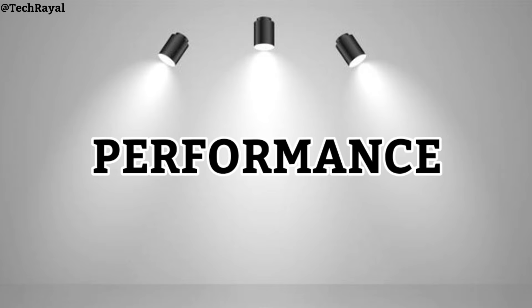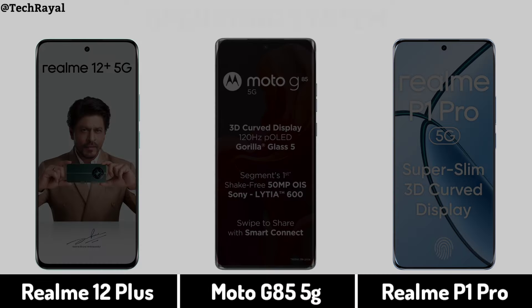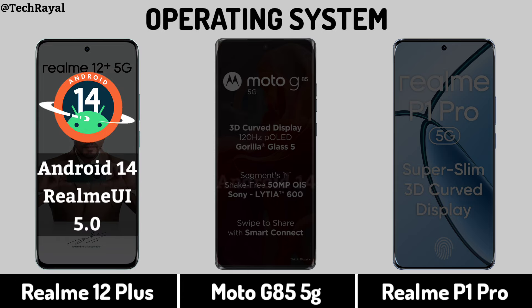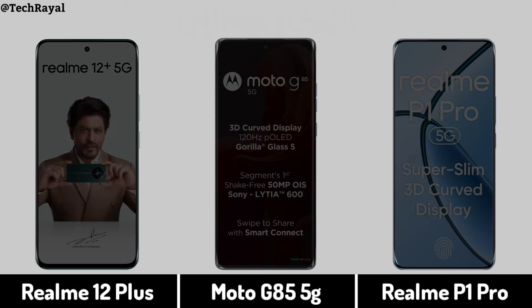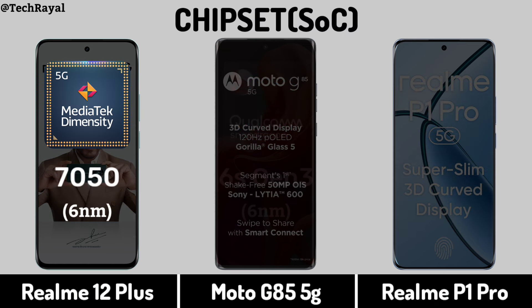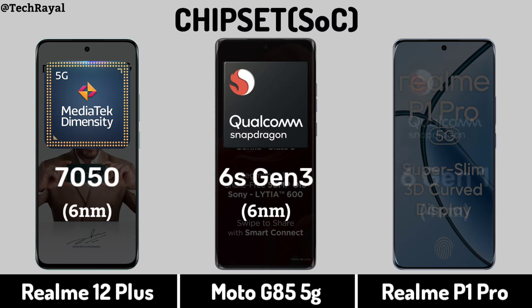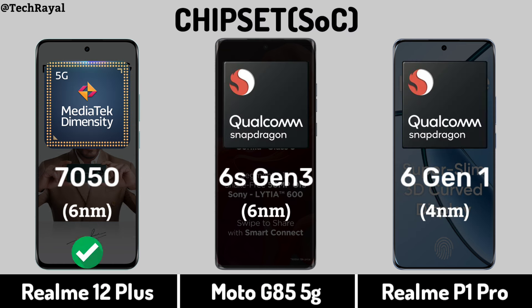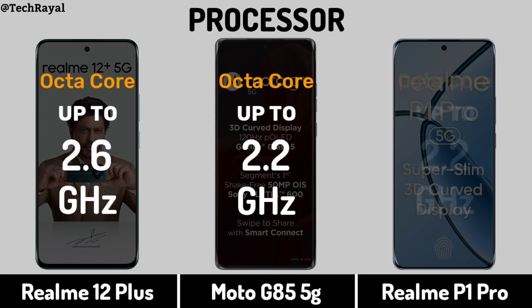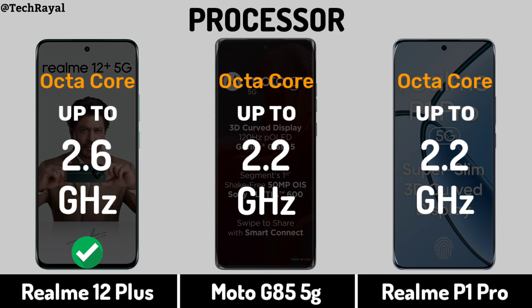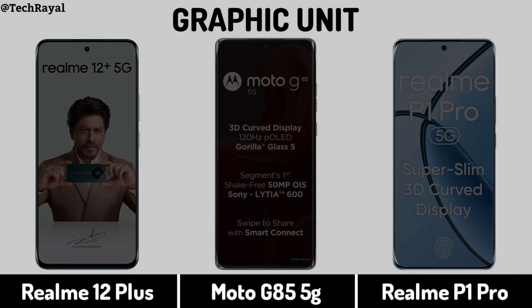Now for Performance: Operating System, Chipset, Processor, Graphic Unit.